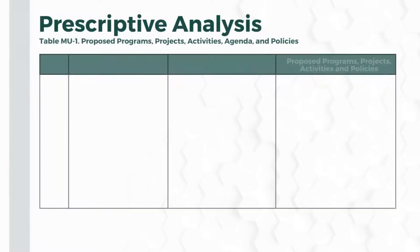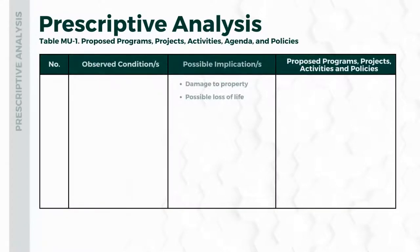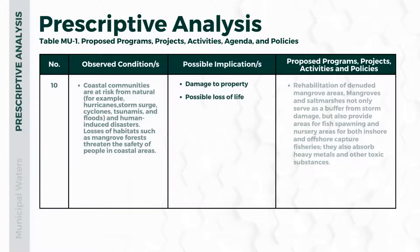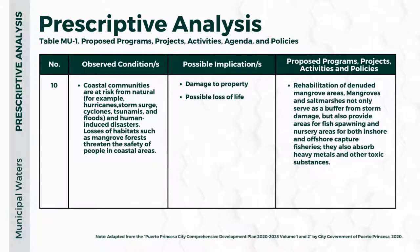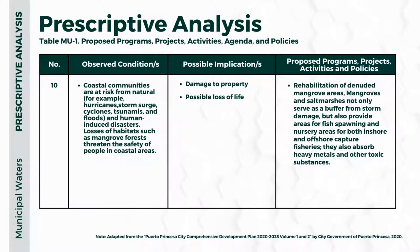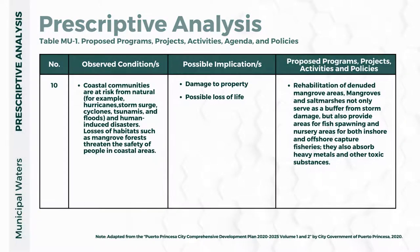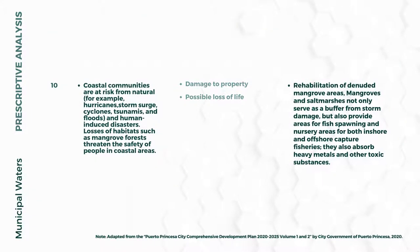Number ten: coastal communities are at risk from natural hazards like hurricanes, storm surge, cyclones, tsunamis, floods, and human-induced disasters, with possible damage to property and loss of lives. The proposed program is rehabilitation of denuded mangrove areas. Mangroves and salt marshes not only serve as a buffer from storm damage, but also provide areas for fish spawning and nursery areas for both inshore and offshore capture fisheries, and absorb heavy metals and other toxic substances.